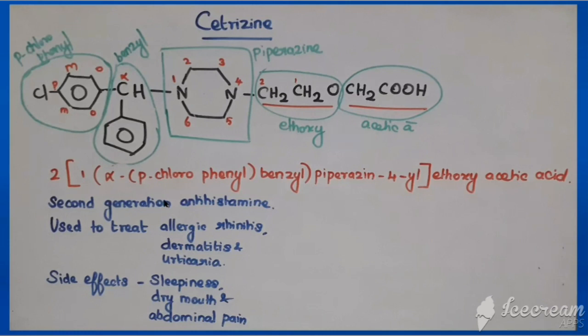Cetirizine is a second-generation antihistamine. It is used to treat allergic rhinitis, dermatitis, and urticaria. Side effects include sleepiness, dry mouth, and abdominal pain.